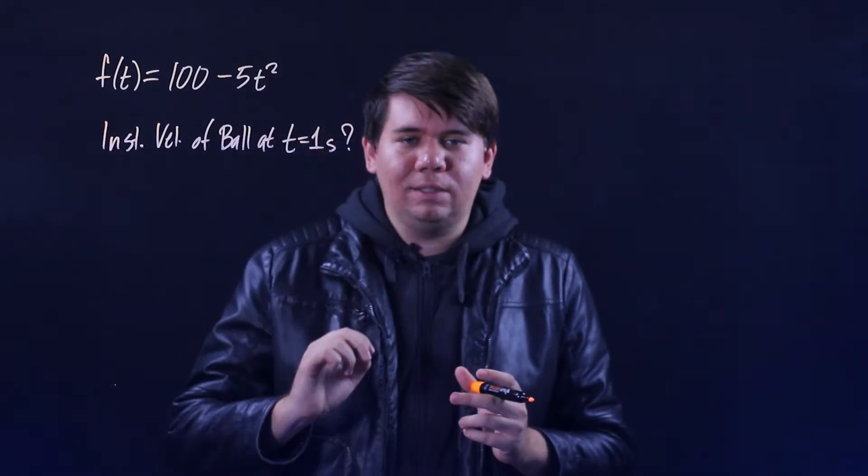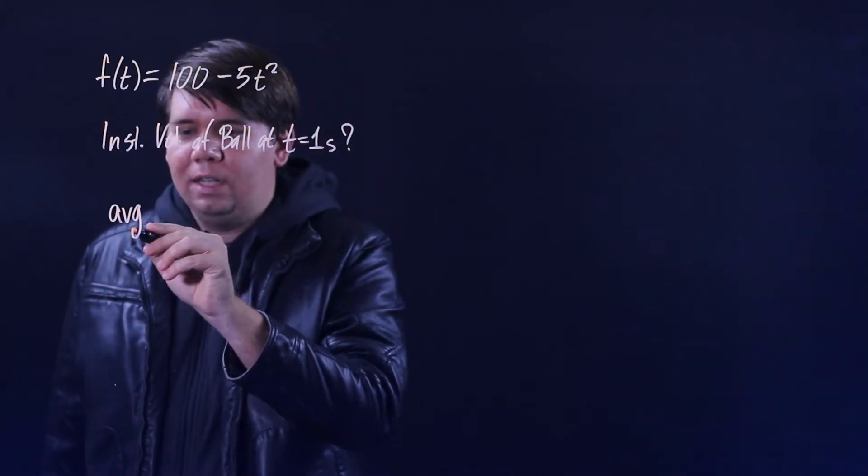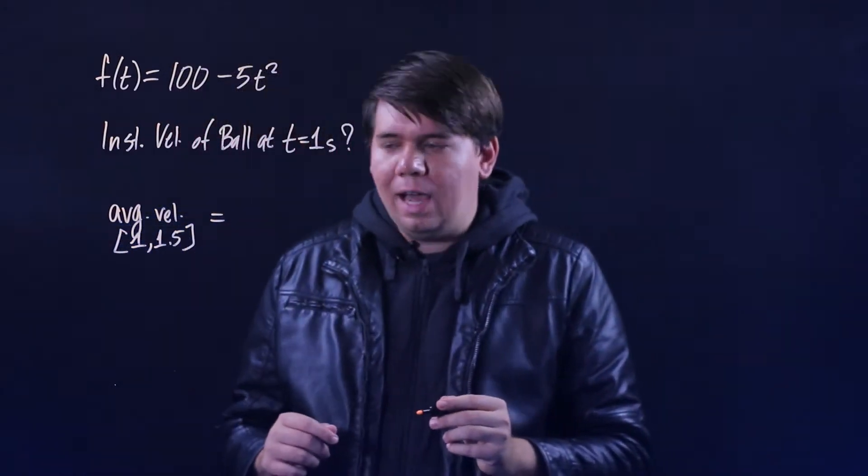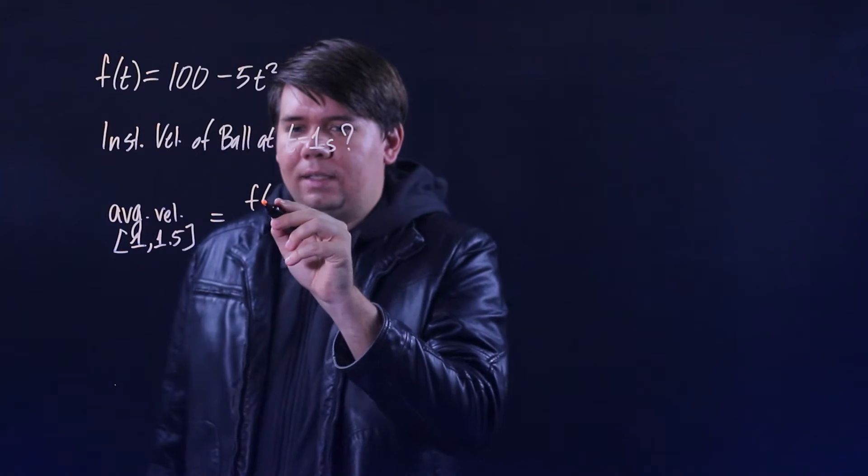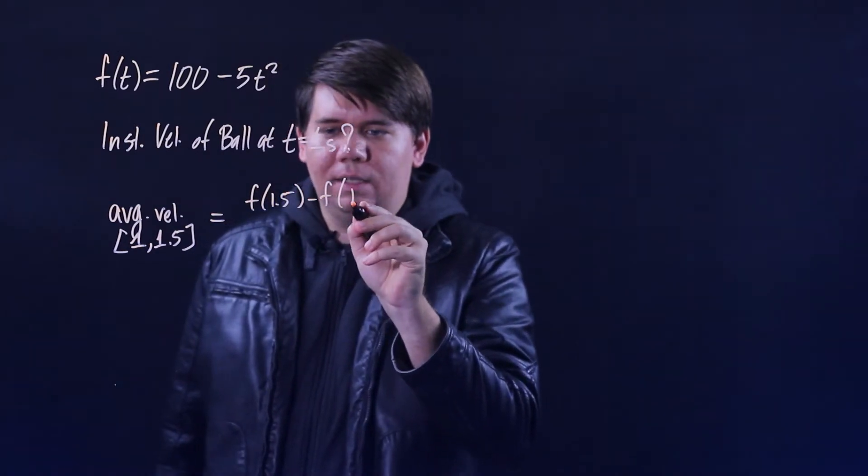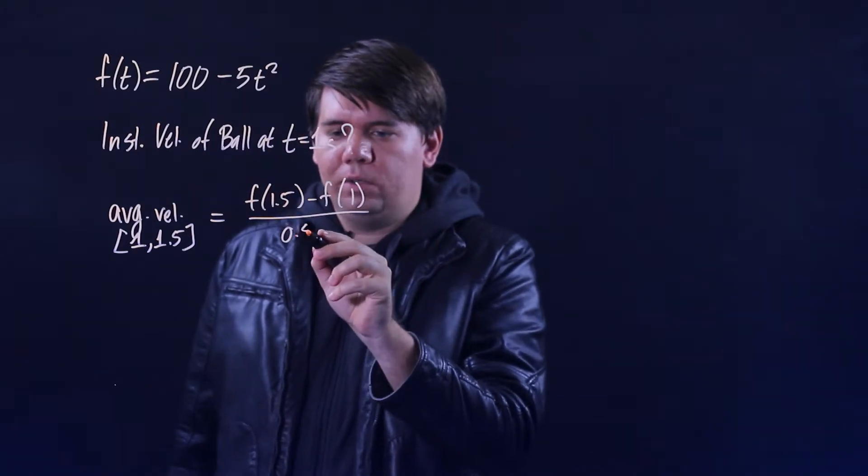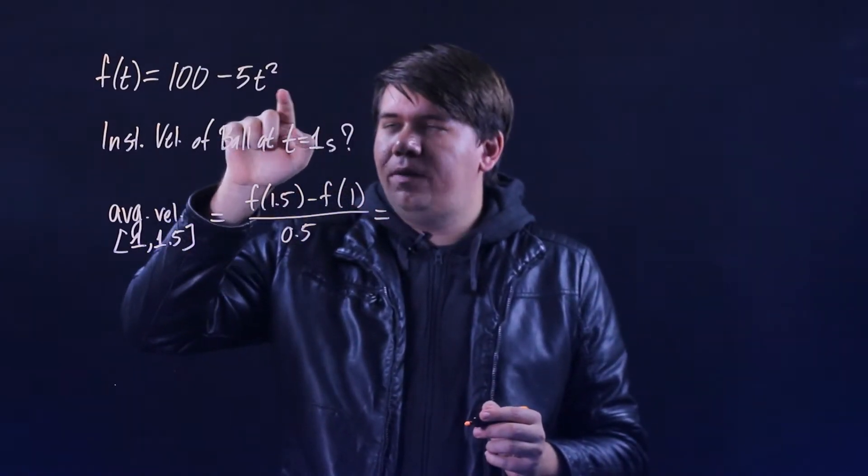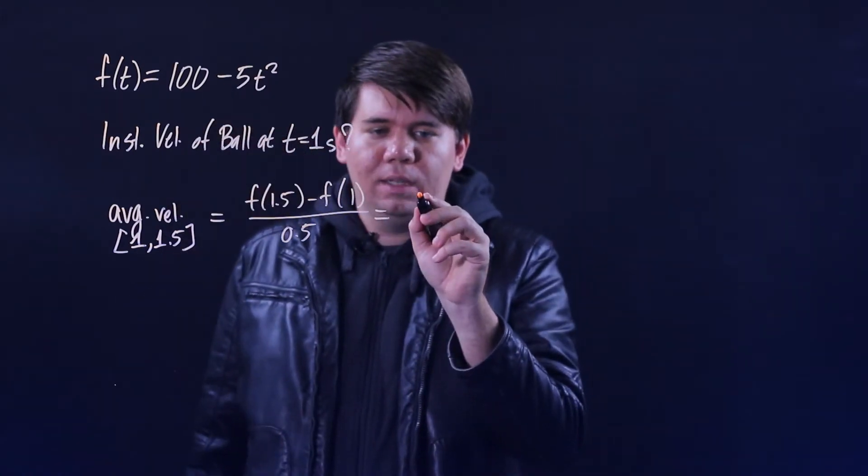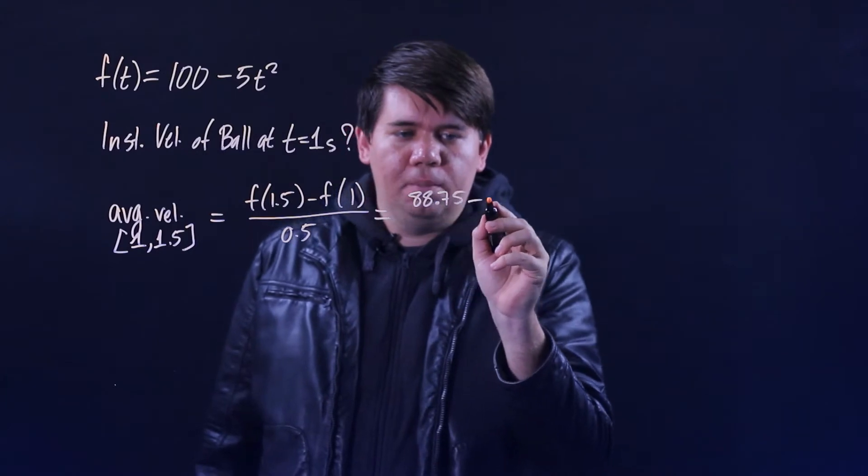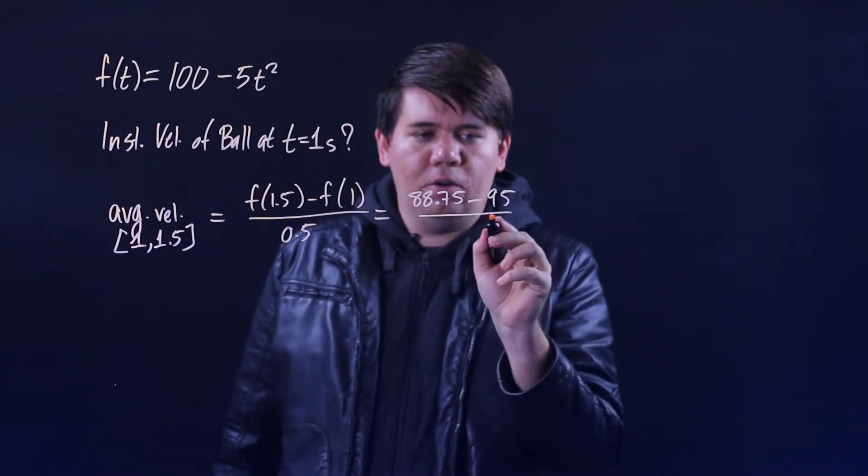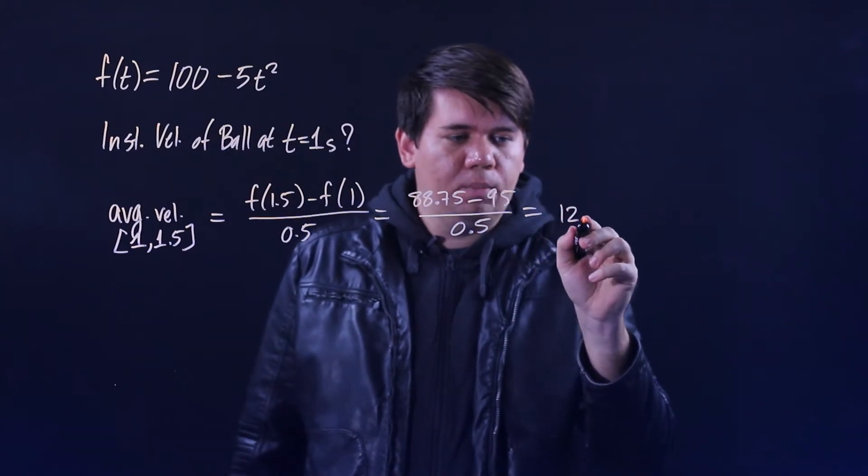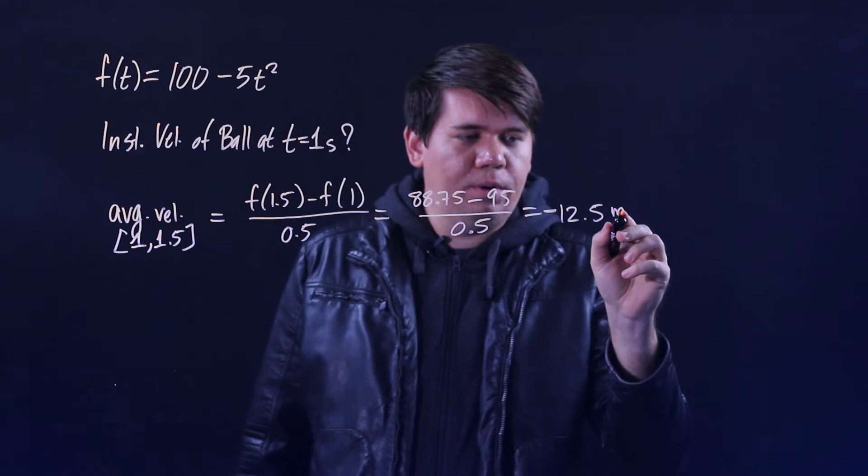You might begin by saying, if you want to know what's going on at one second, let's focus on some period of time—say the average velocity from one second to 1.5 seconds. We can calculate that: it's the height at time 1.5 minus the height at time one, all over the difference between 1.5 and 1, which is 0.5. And we can calculate this out: at 1.5 we're at 1.5² (2.25) times 5 (11.25) subtracted from 100, that's 88.75, minus at time one we're at 95, all over 0.5. Subtract this, divide by a half—that's times by two—you get negative 12.5 meters per second.